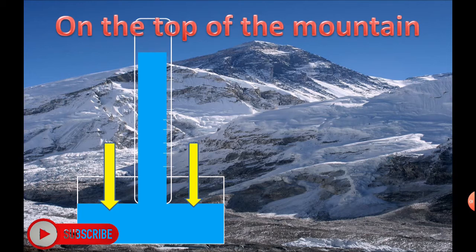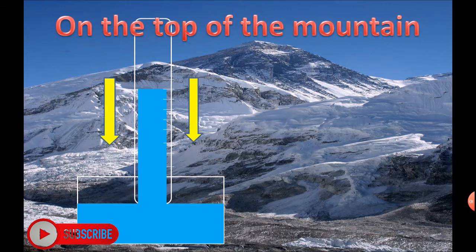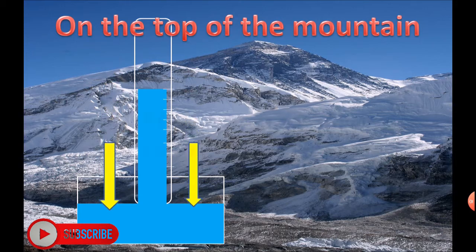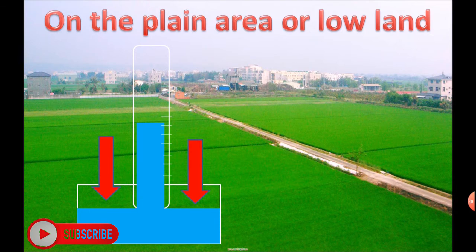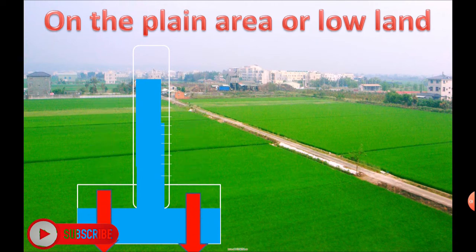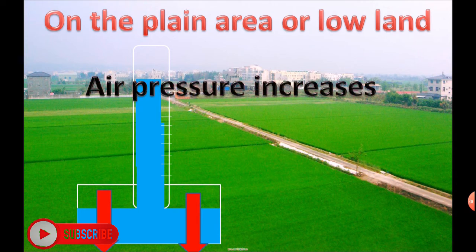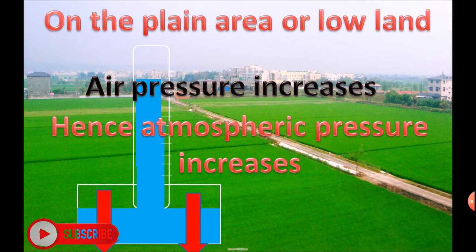On the top of a mountain, atmospheric pressure decreases because air pressure decreases. On the plain area or lowland, atmospheric pressure increases because air pressure increases.